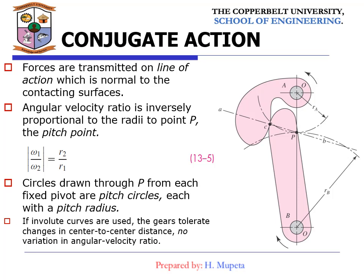Forces are transmitted along the line of action, which is normal to the contacting surfaces. The angular velocity ratio is inversely proportional to the radii to point P, as given by equation 13.5. Circles drawn through P from each fixed pivot are pitch circles, and each has only one pitch radius. If the center-to-center distance changes, there will be no variation in the angular velocity ratio. We will see how to calculate the center-to-center distance and the angular velocity ratio.